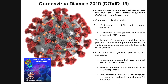When we look at the coronavirus as it replicates inside a host cell, it's going to have two fairly unique biochemical mechanisms. One is ribosome frameshifting during genome translation. We're going to see that in the initial production of polyproteins, which are used to generate most of the protein machinery of the replosome/transcriptosome. We're also going to see synthesis of both genomic and multiple subgenomic RNA species.